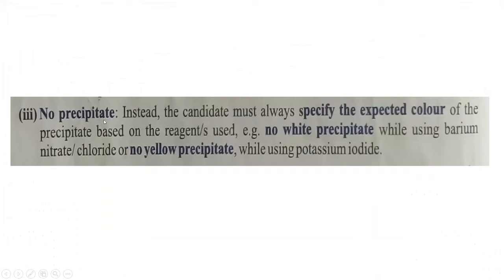Regarding precipitates: you may expect a white, yellow, or green precipitate depending on the reagents given. If that expected precipitate does not form, the result is negative. The correct way is to write 'no white precipitate' — or whatever color you expected. Don't just write 'no precipitate' — you will get zero.